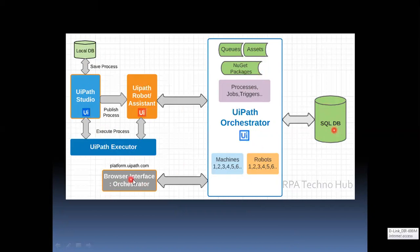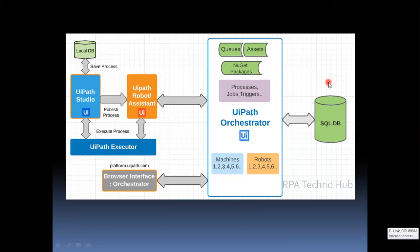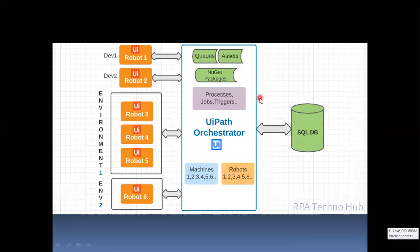Using the browser interface you can access Orchestrator and create an Orchestrator process for that particular NuGet package. In the Jobs menu you can run the process manually, and in Triggers you can schedule it to any particular time. Once the process is triggered from UiPath Orchestrator, the command will be sent to the UiPath Robot, which will invoke the UiPath Executor to execute that particular business process. The logs will be written back to Orchestrator and stored in Elasticsearch, which is a non-RDBMS.